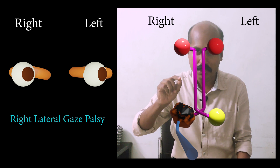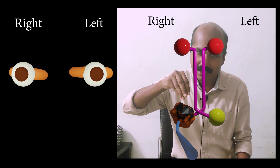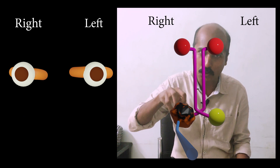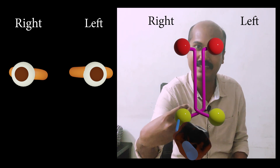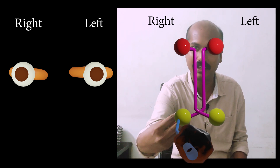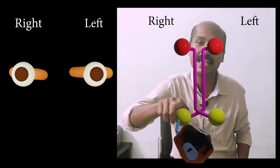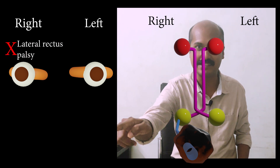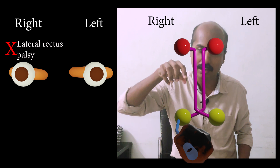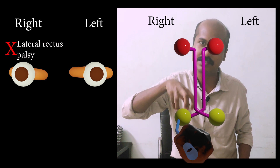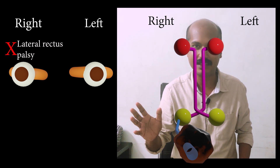One important distinction: if the lesion is not in the nucleus but in the abducens nerve fascicles, you only have a lateral rectus palsy of the right side and not a gaze palsy. A gaze palsy will occur only if the abducens nucleus itself is affected.